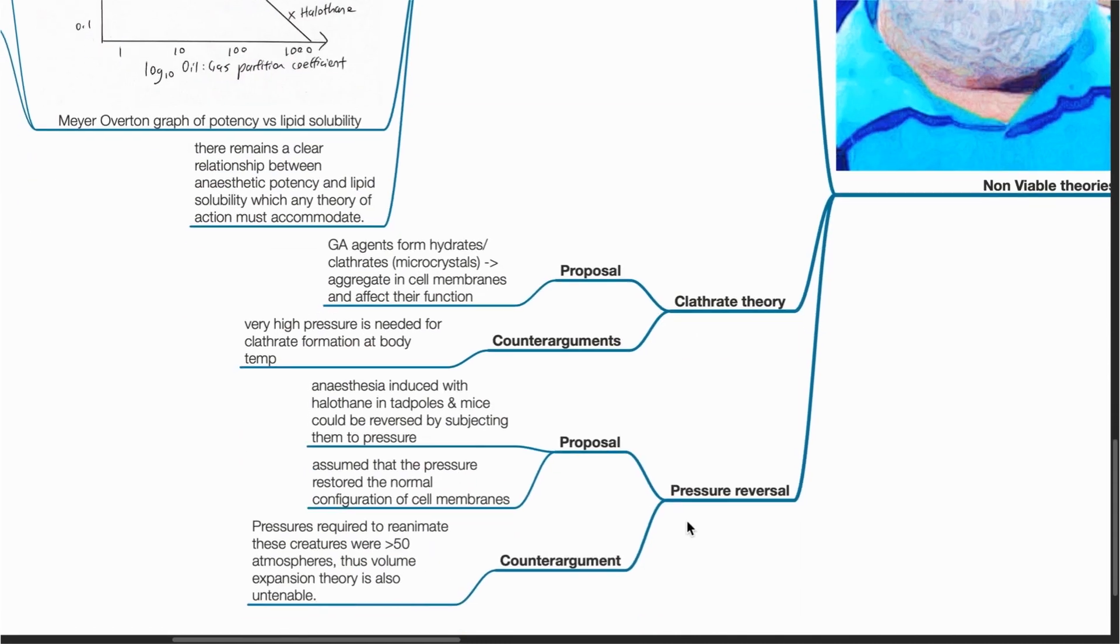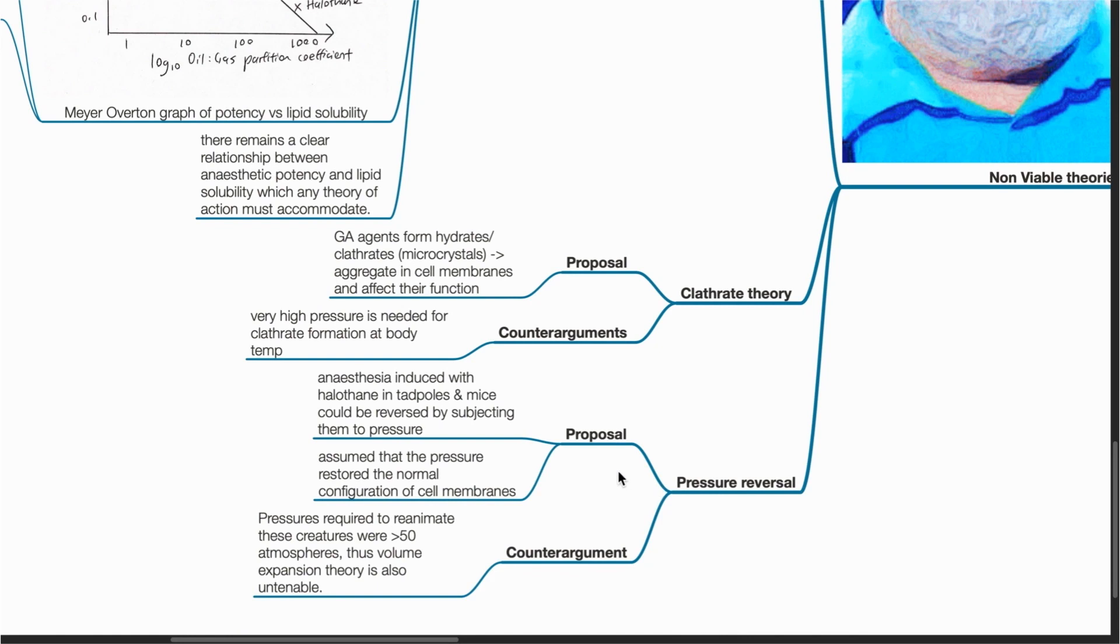Lastly, pressure reversal theory, which proposes that anesthesia induced with halothane in tadpoles and mice could be reversed by subjecting them to pressure. They assumed that the pressure restored the normal configuration of cell membranes. However, the pressure required to reanimate these creatures was more than 50 atmospheres. Thus, volume expansion theory is also untenable.